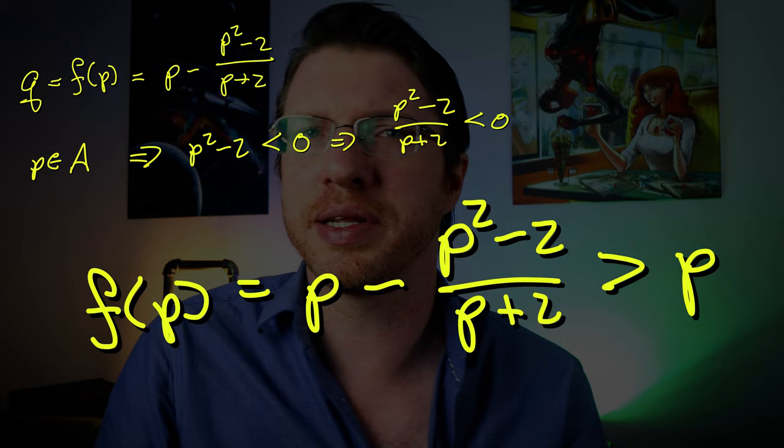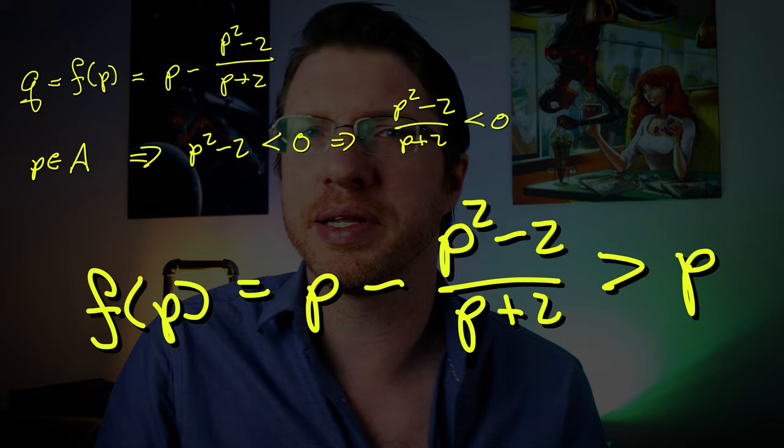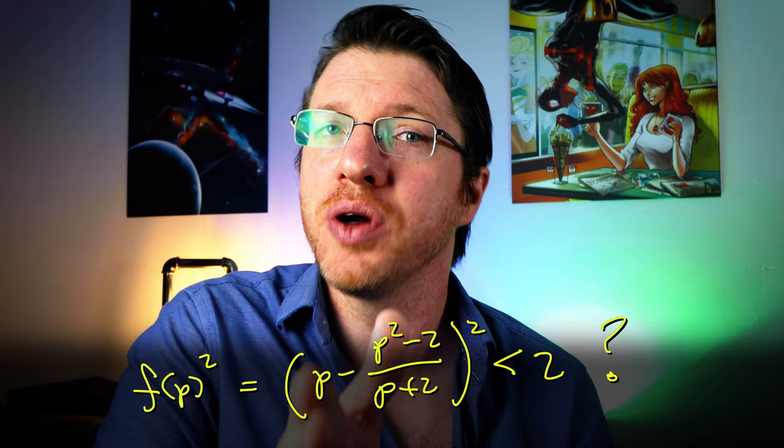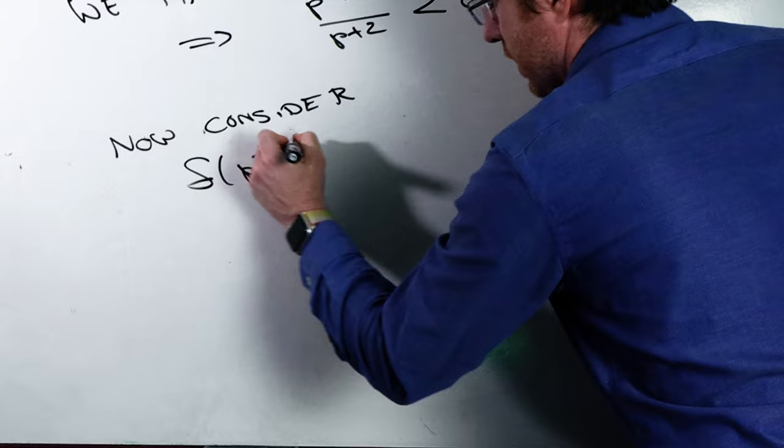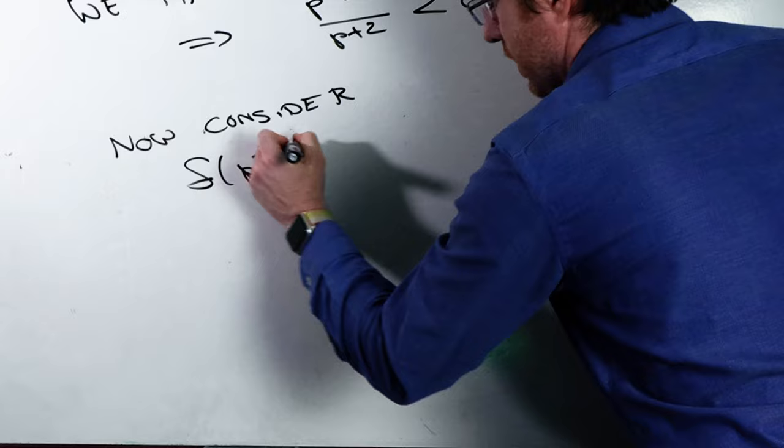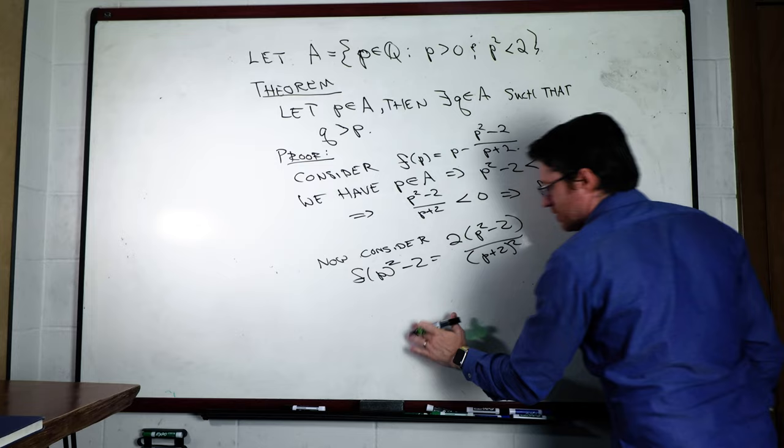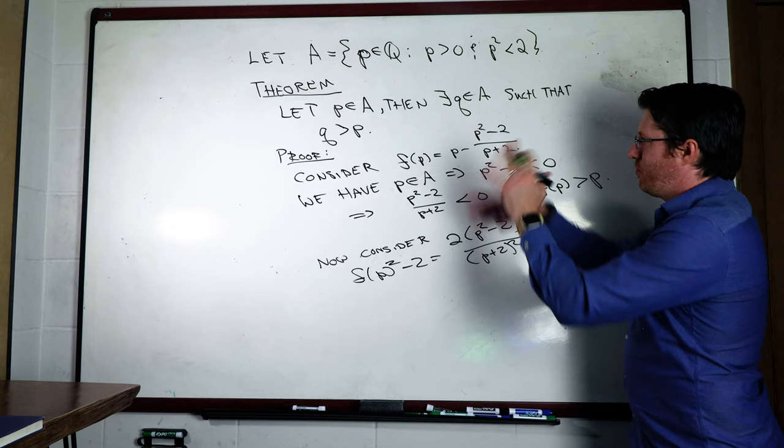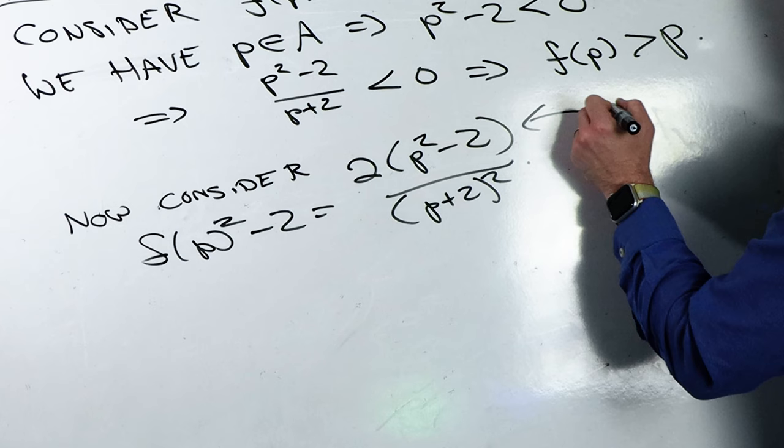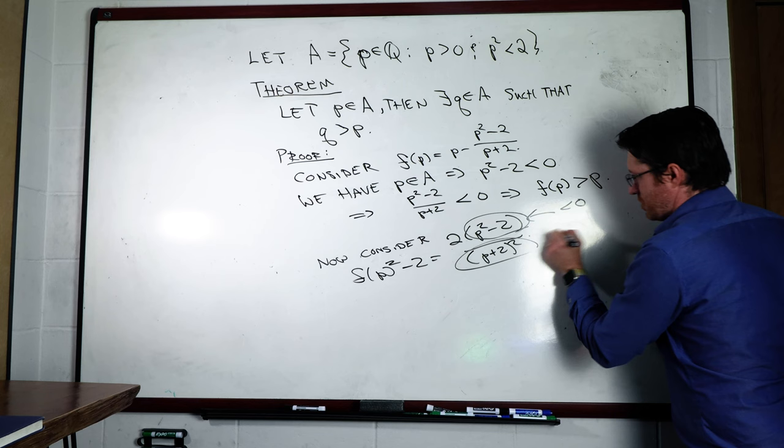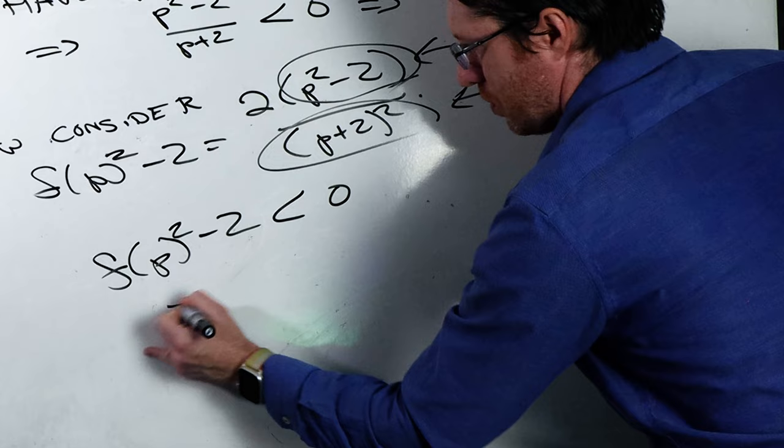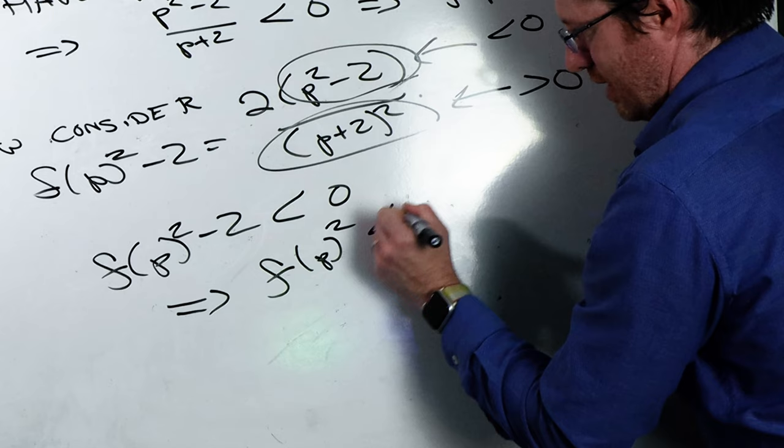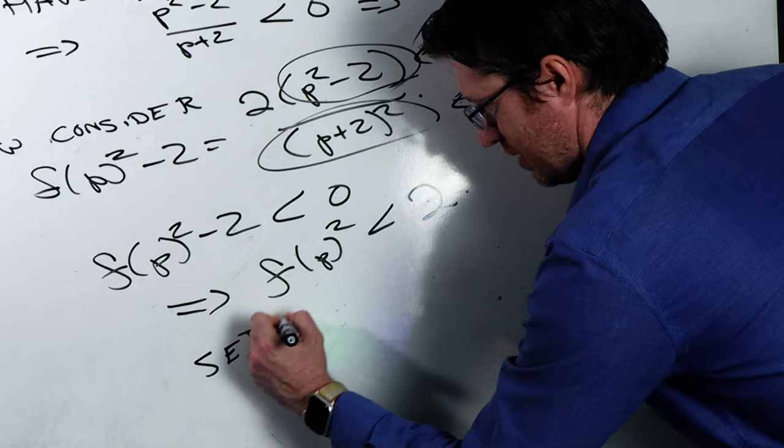Actually, it's not that much work, we just need to square this rational function. Playing with polynomials, we see that f of p squared minus 2 gets us 2 times (p squared minus 2) divided by (p plus 2) squared. And you can do this by just multiplying the rational function. It works out. And so what you see, then, is that this ends up being negative, just because p itself is in A, which means that since this is positive, we have that f of p squared minus 2 is negative, which then tells us that f of p squared is less than 2. And well, if we set q equal to f of p, then we're done.